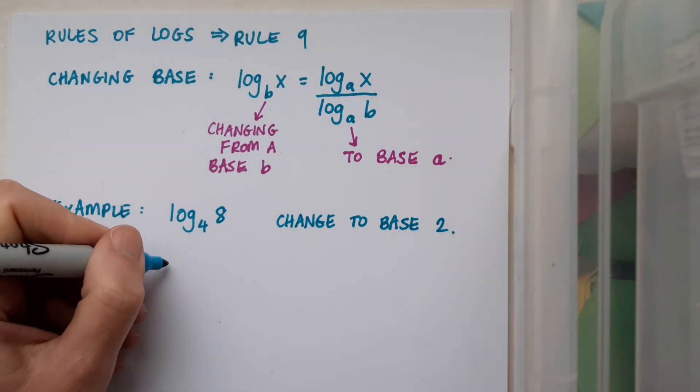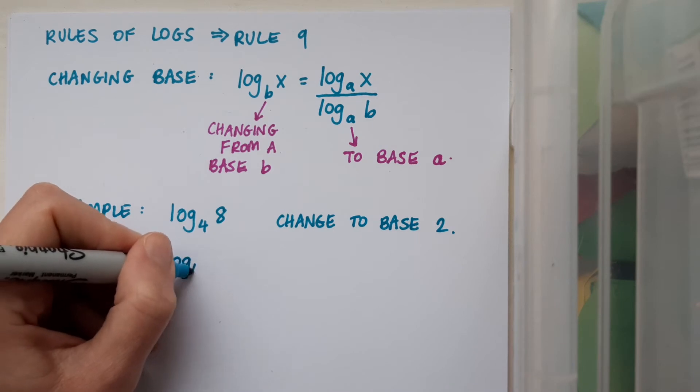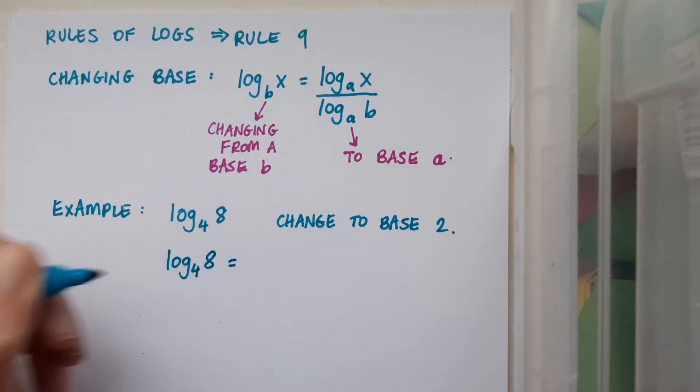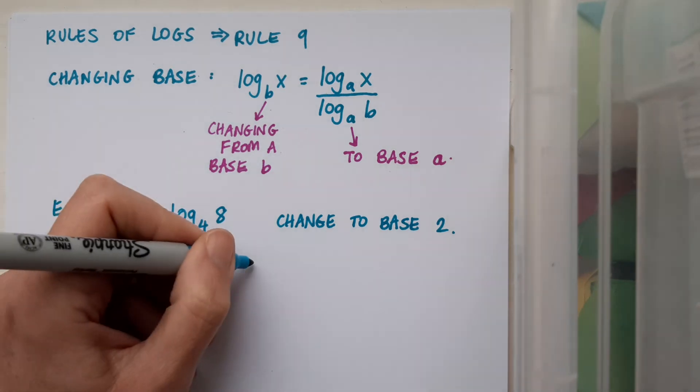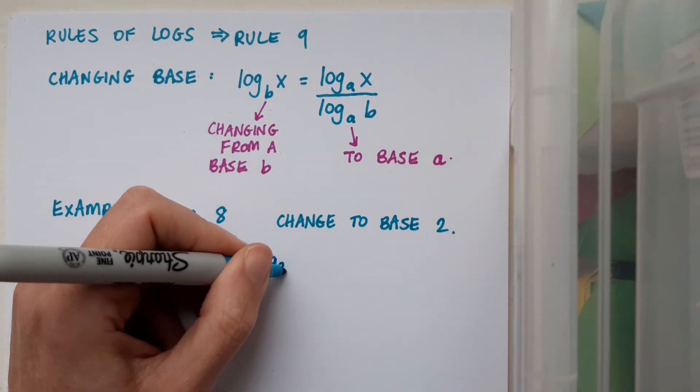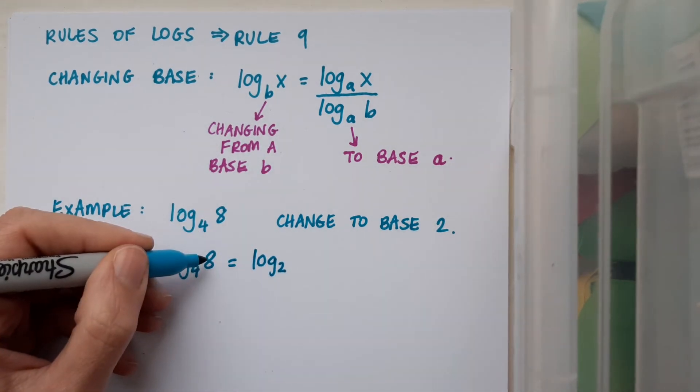So in this case, I'm going to have log to the base 4 of 8 equals... I want a base of 2, log to the base 2. On top, I'm going to have this big number, the 8.